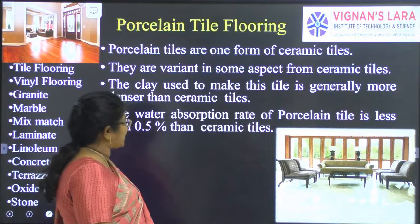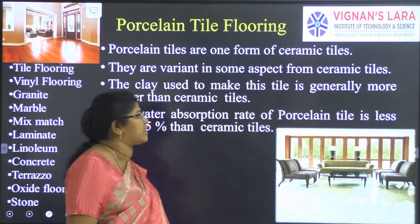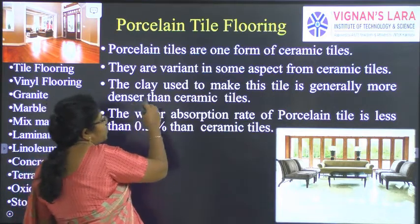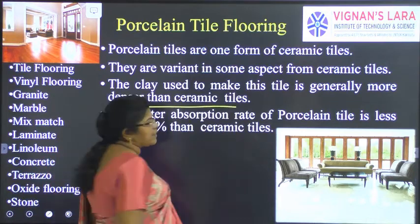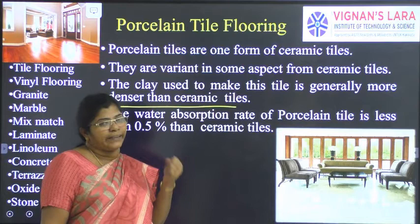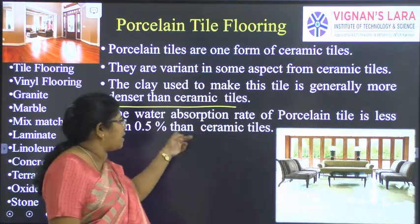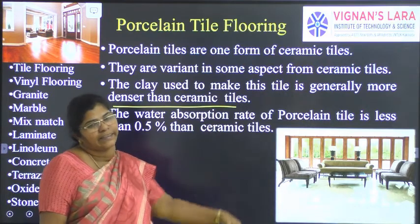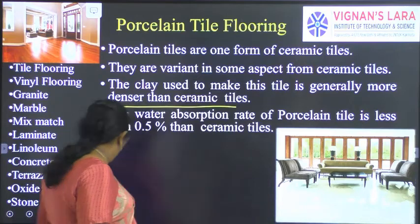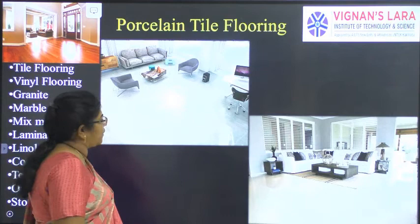The next type is porcelain tiles. This is also a type of ceramic tile but gives a very glazed finish. The clay used to make porcelain tiles is generally denser than that used for ceramic tiles. The water absorption rate of porcelain tiles is less than 0.5% compared to ceramic tiles. You can see how glossy it looks when going for porcelain tiles.